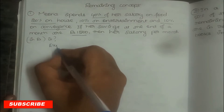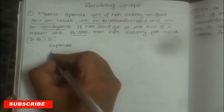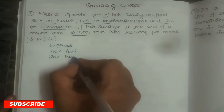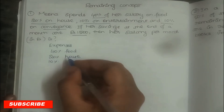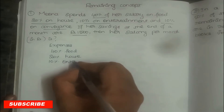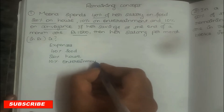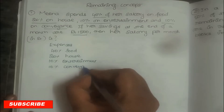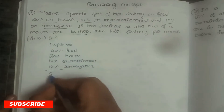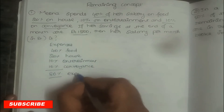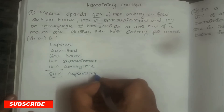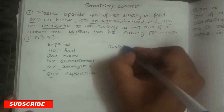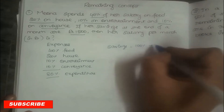Expenses: 40% for food, 20% for house, 10% for entertainment, 10% for conveyance. Total expenditure is the addition of all expenses, which is 80%. So savings = 100% minus expenditure = 20%.